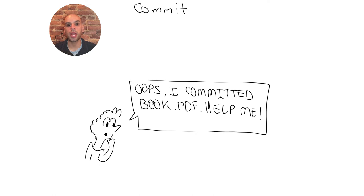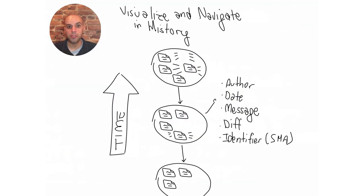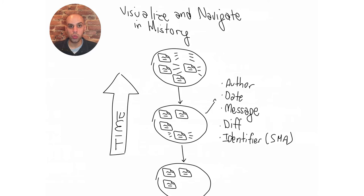Now Alice is creating more and more commits with snapshots of the working directory as it progresses over time, and she wants to answer questions like: who contributed the brownies recipe? When did I add cocoa to cookies? Why did I remove flax seeds from cake? How much sugar was there in the pancakes last month? All these questions can be answered by navigating the history of the project. The history is represented by circles — each circle is a commit — and time goes from the bottom up. Each commit includes author, date, the commit message, what changed, and an identifier.